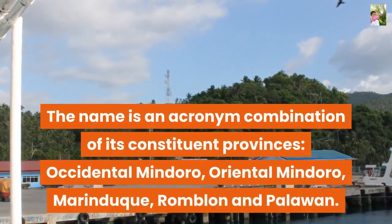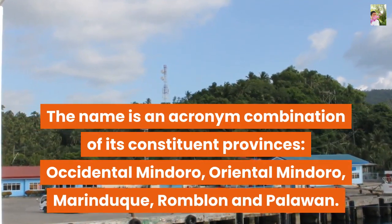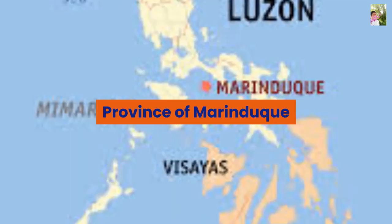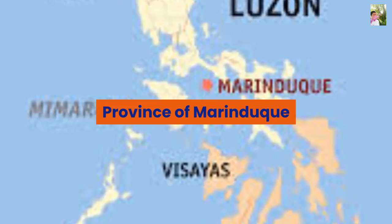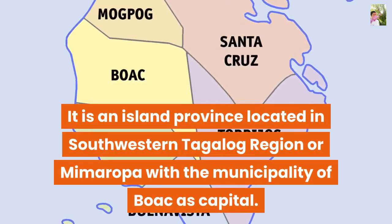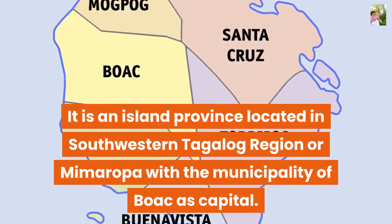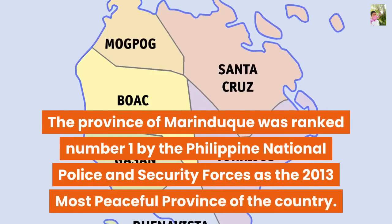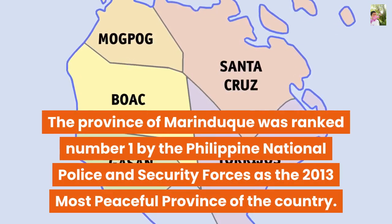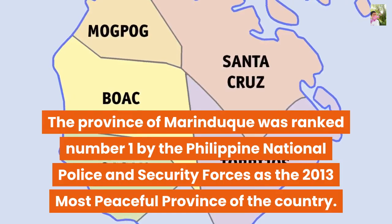The name MIMAROPA is an acronym combination of its constituent provinces: Occidental Mindoro, Oriental Mindoro, Marinduque, Romblon, and Palawan. The Province of Marinduque is an island province located in the Southwestern Tagalog Region or MIMAROPA, with the municipality of Boac as capital. Marinduque was ranked number one by the Philippine National Police as the 2013 most peaceful province of the country.